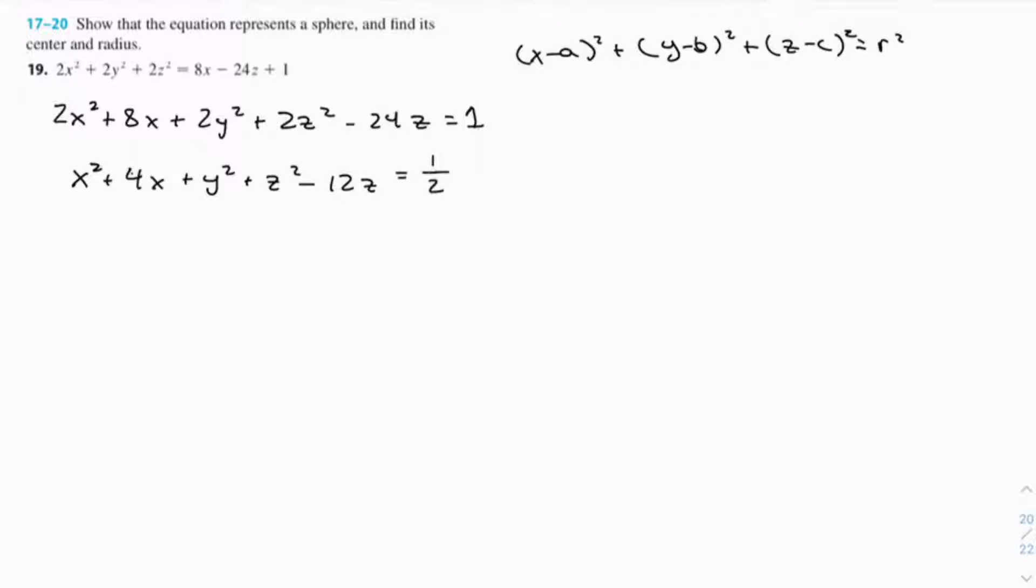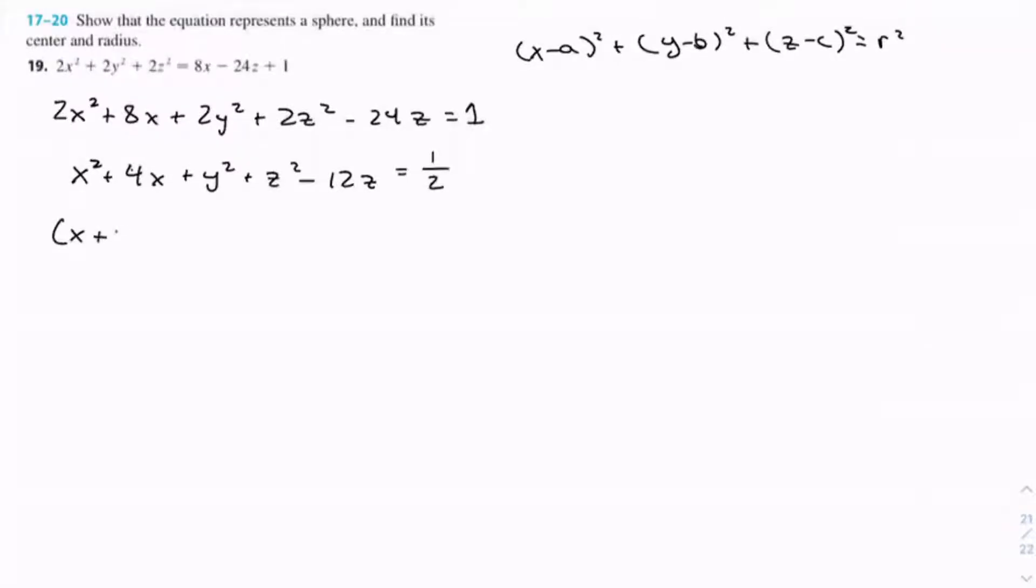Alright, now we're going to complete the square for the x's, the y's, and the z's. When you complete the square, you get x and then your next component is half of the coefficient. For this case it would be 4x, so half of 4, which gives (x + 2)². You can see that this equals x² + 4x + 4, so we need to add 4 to the right side to make both sides equal.